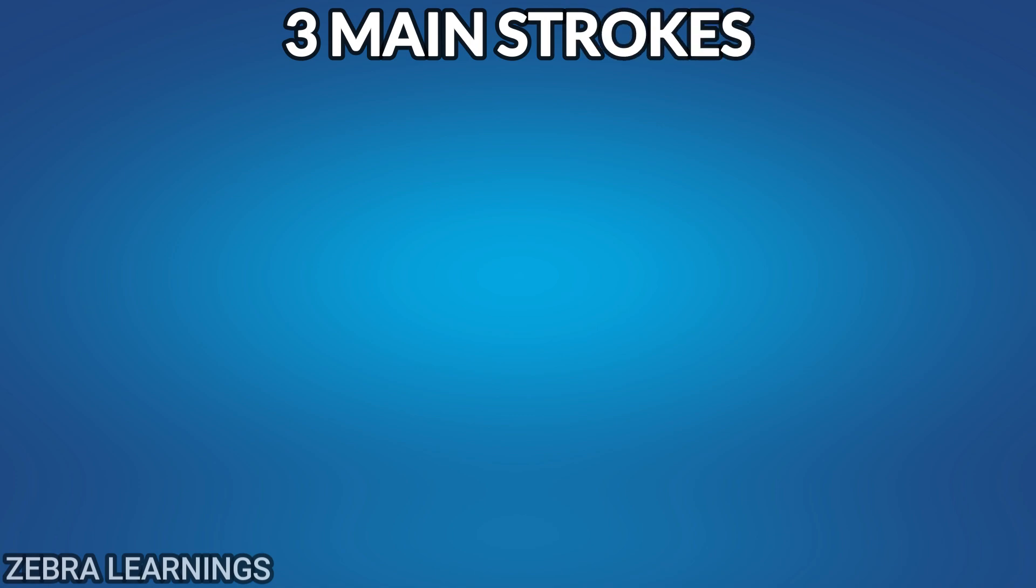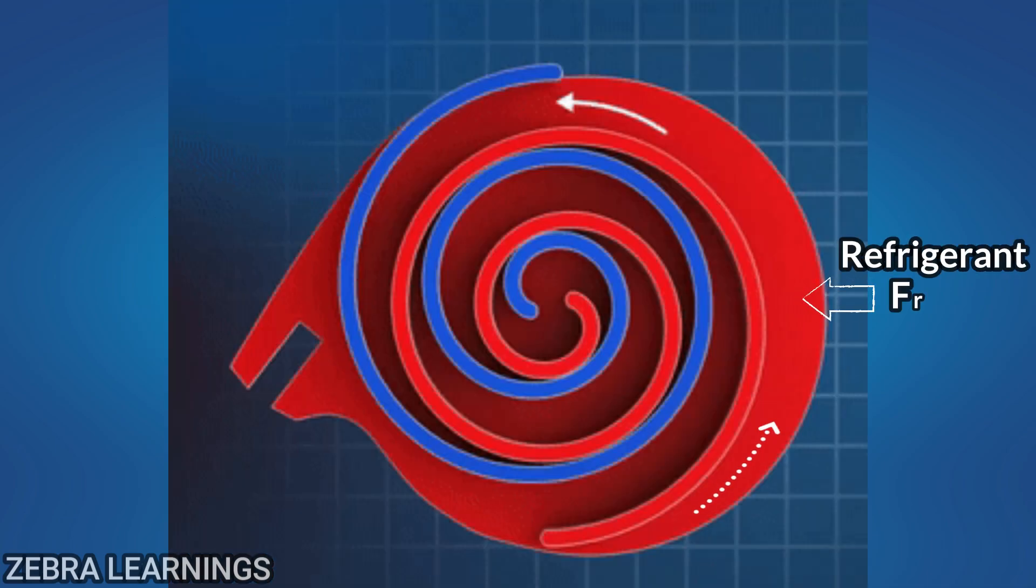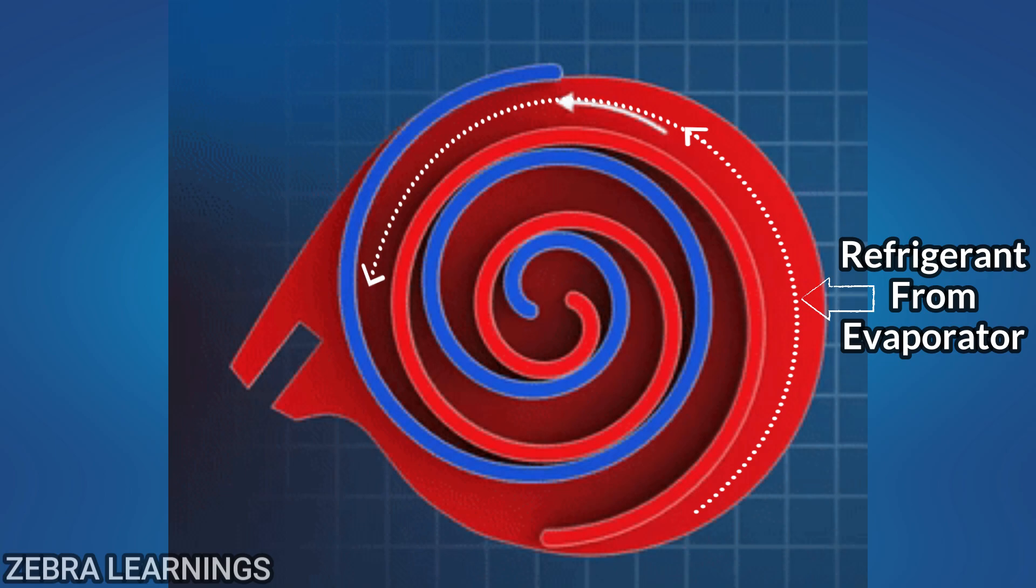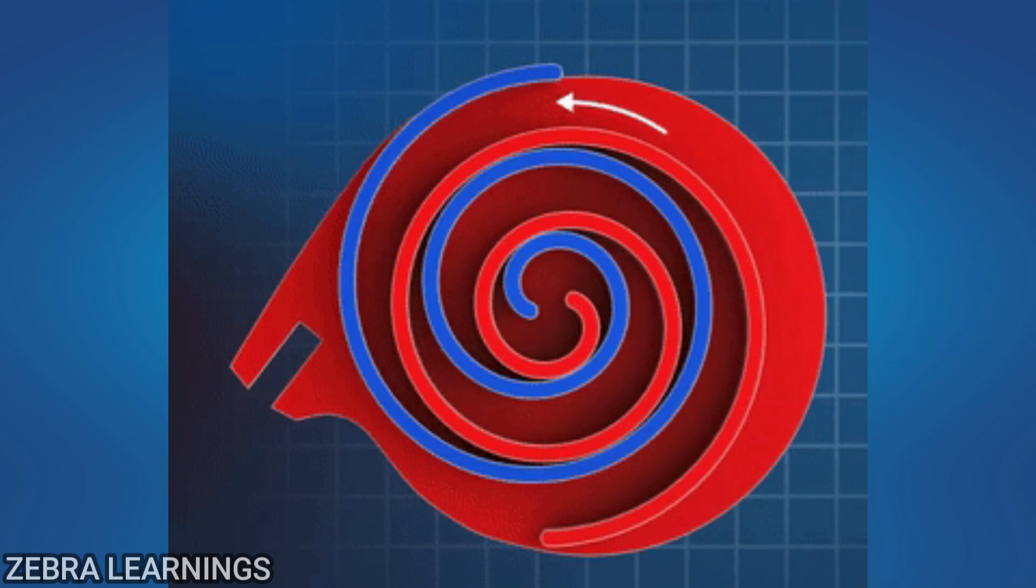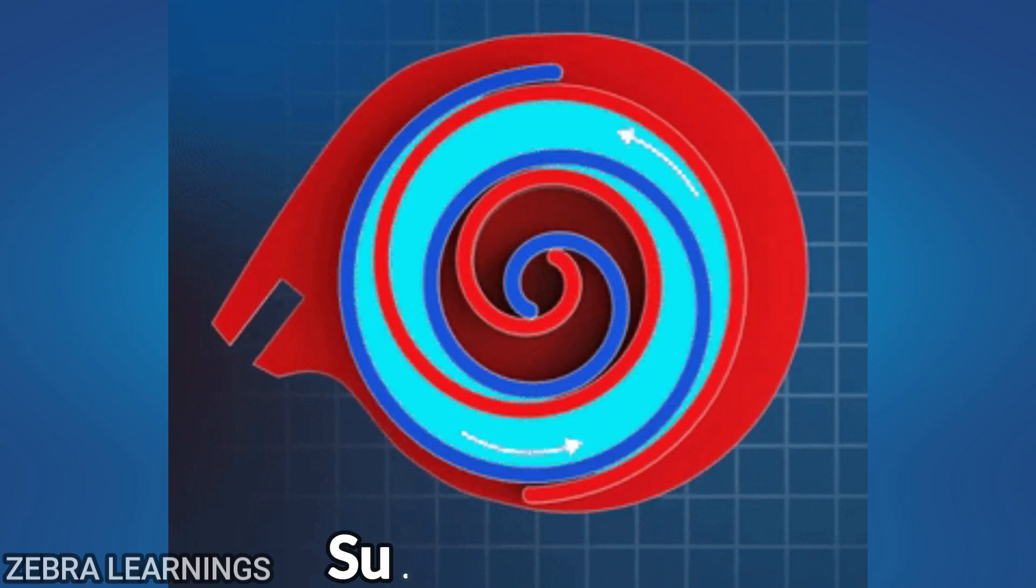This compressor operates in three main strokes: suction, compression, and discharge. The refrigerant from the evaporator enters through the outer edge of the scrolls. Due to the suction force of the compressor, the refrigerant gets pulled into the scroll. This is called the suction stroke.